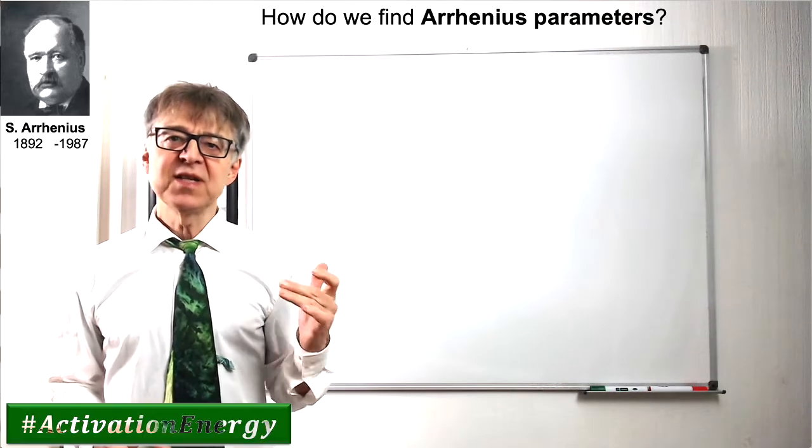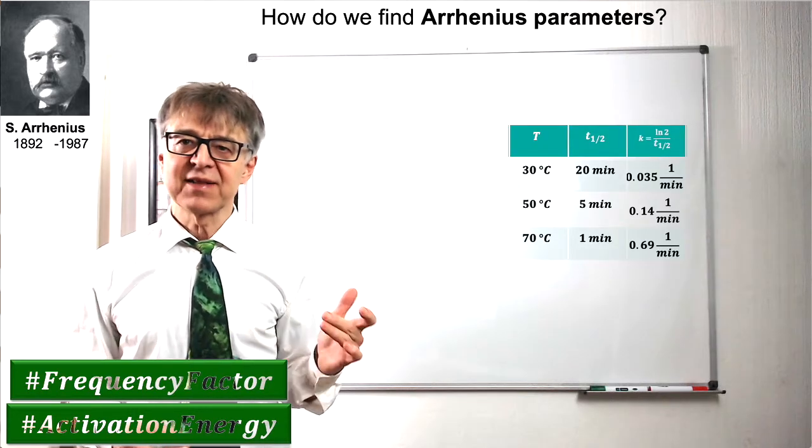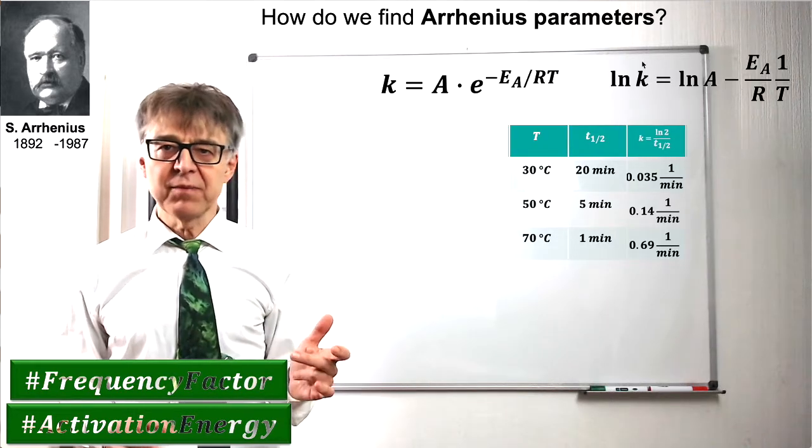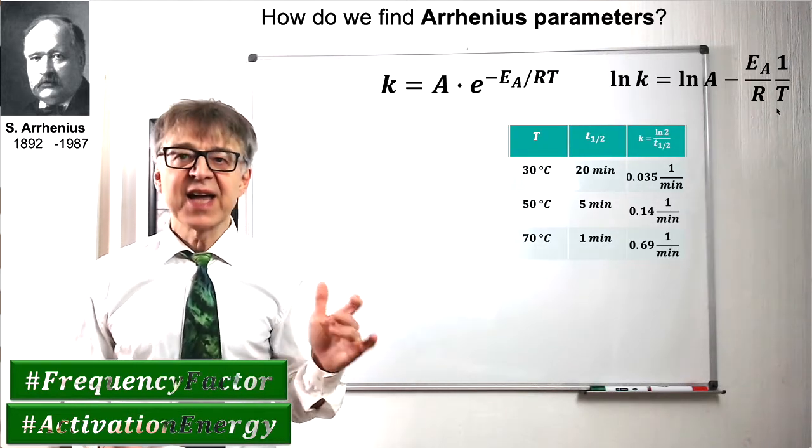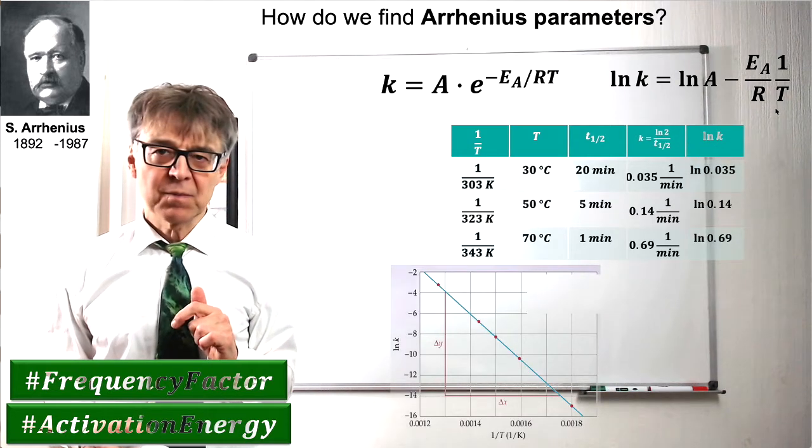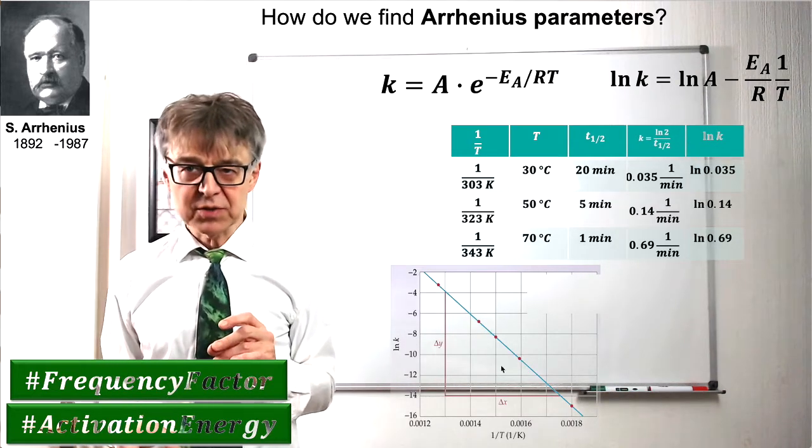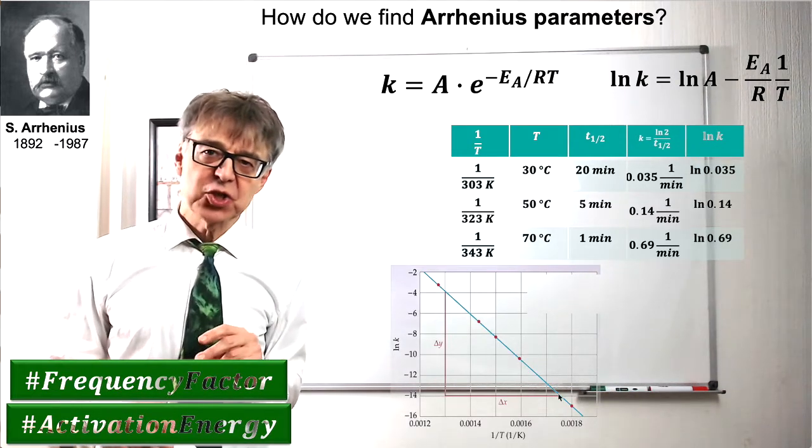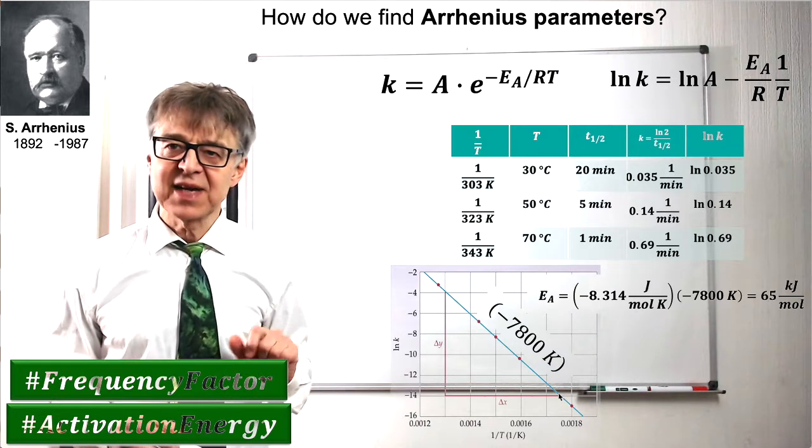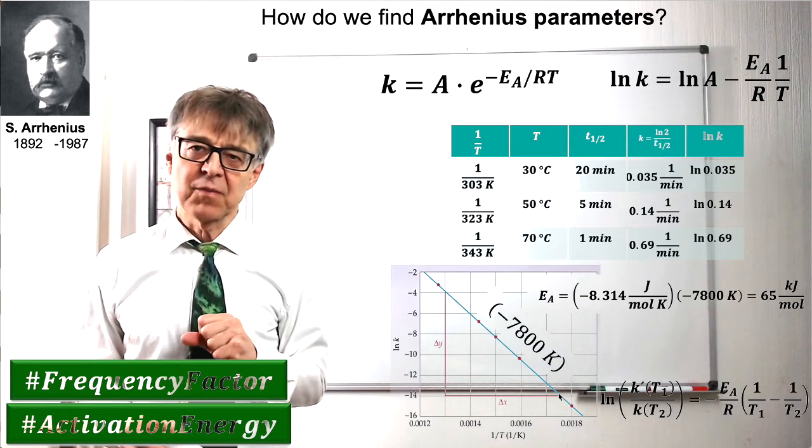We can determine the Arrhenius parameters from our experimental data if we plot the logarithm of the rate constant against the reciprocal of the absolute temperature. This is called the Arrhenius plot. We get the activation energy from the slope of the resulting straight line, the frequency factor from the intercept.